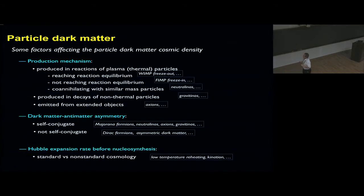For the symmetry between dark matter and anti-dark matter, it could be self-conjugate or non-self-conjugate like Dirac fermions, or maybe self-conjugate like Majorana fermions or axions. Also, the Hubble expansion rate before nucleosynthesis, which is not measured. We don't know what happened to the universe before nucleosynthesis. We don't have any constraint.